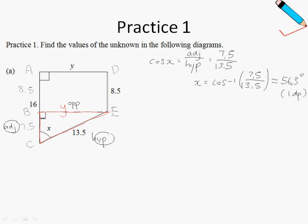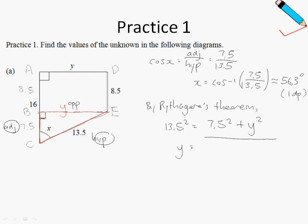So how do I find Y? By Pythagoras theorem: 13.5 squared equals 7.5 squared plus Y squared. So Y would just be the square root of 13.5 squared minus 7.5 squared. If I round it off to three significant figures, I get 11.2 centimeters, to 3SF.